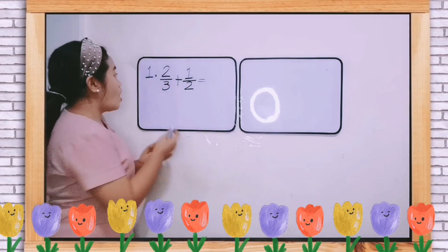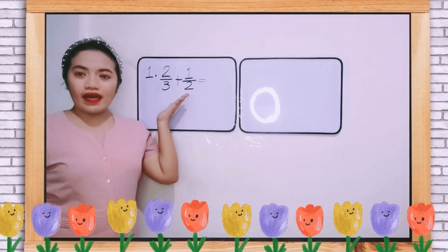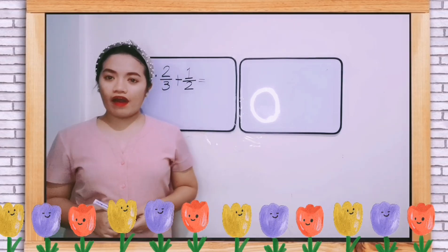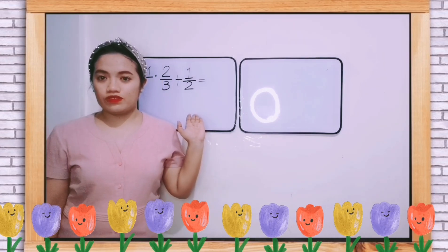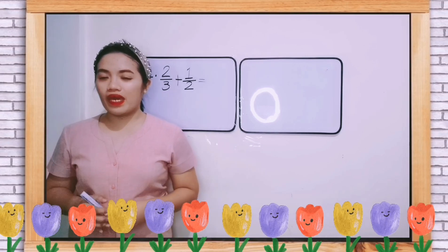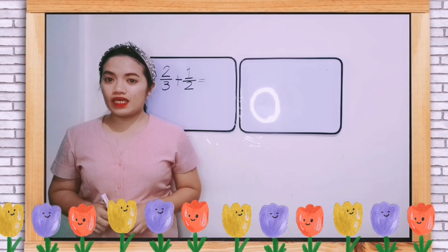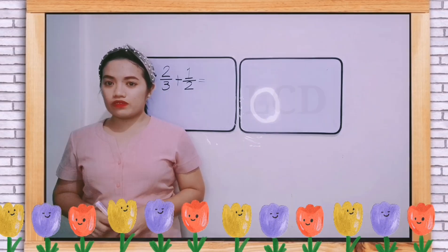Example number one: two-thirds plus one-half. As you can see, we have different denominators. So how can we make it similar? First, we need to find the LCD of our denominators.